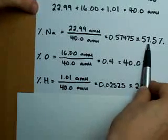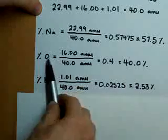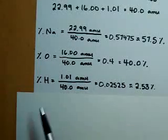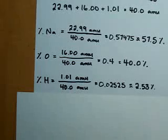57.5% sodium, 40% oxygen, 2.53% hydrogen is the percent composition of sodium hydroxide.